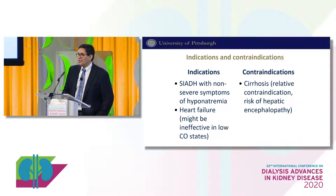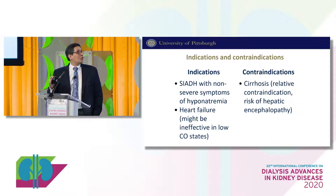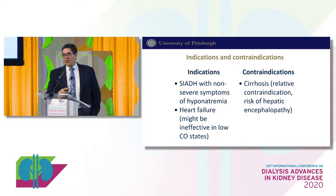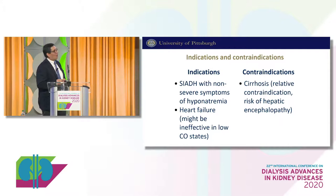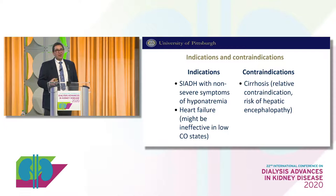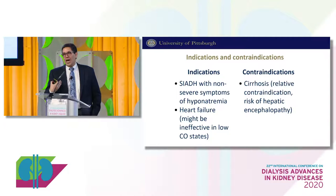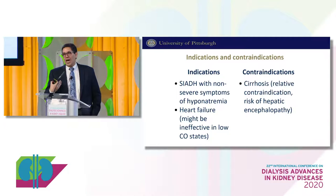The most common indication for urea is SIADH with non-severe symptoms — if symptoms are severe, hypertonic saline would be the choice, but without significant symptoms, urea can be used. Heart failure is another indication, although if cardiac output is very low, urea won't get filtered and won't work. A relative contraindication is cirrhosis, due to the theoretical risk that urea could be converted to ammonium and cause hepatic encephalopathy, though this risk hasn't been studied prospectively, and I have used urea in a few cirrhotics with good results and no encephalopathy.